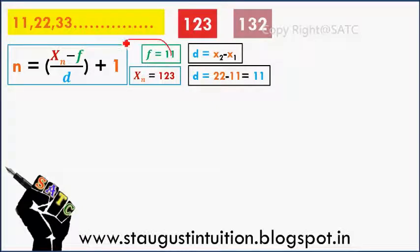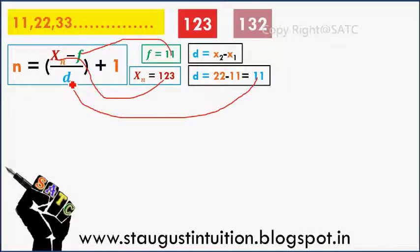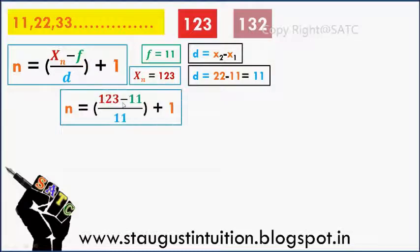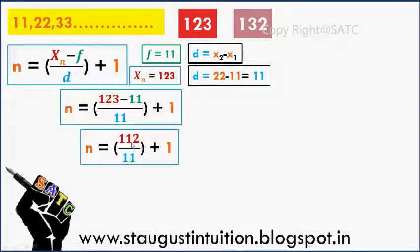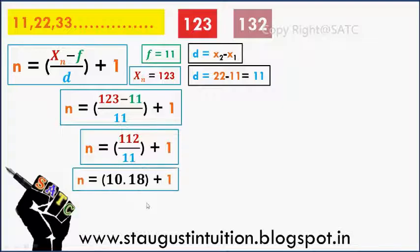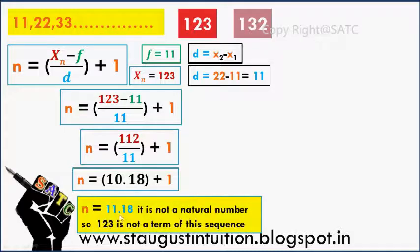Now we apply this value. e is 11. We will add e to the common difference. So xn will be 33 and fn will be 33, divided by d is 33. We will divide by 32. If we divide it, we get the common difference — which is no whole number.